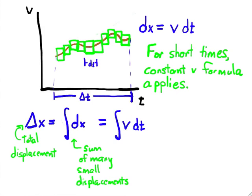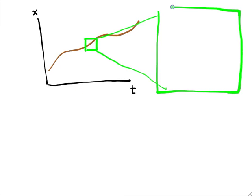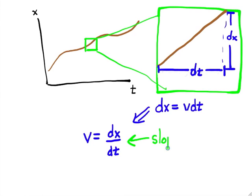The small quantities dx and dt show up elsewhere as well. If we consider the position plotted versus time, we can again zoom in on a very small time interval dt. Then the graph looks approximately like a straight line, and the slope is dx over dt. This is the definition of the derivative. So taking the derivative of position gives velocity, and integrating velocity gives the change in position.